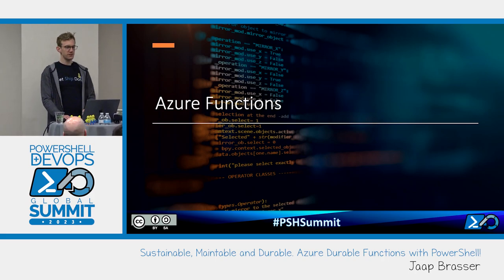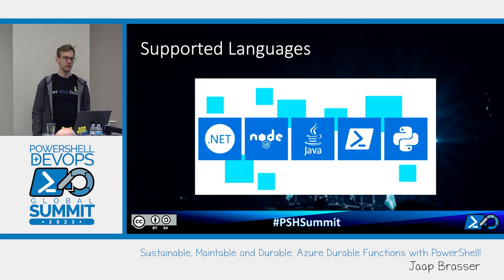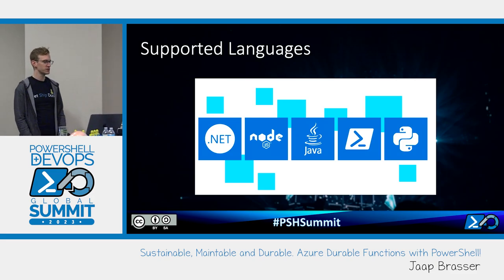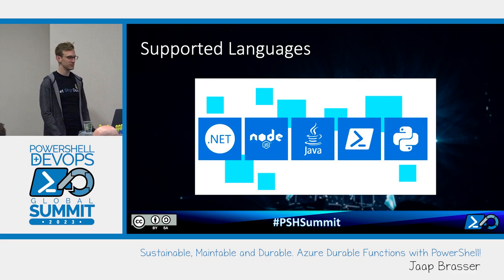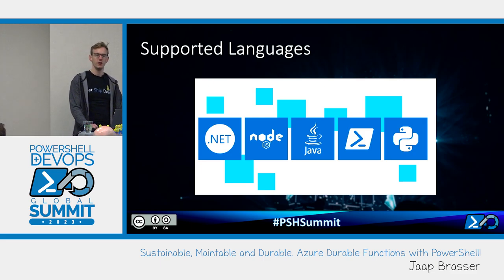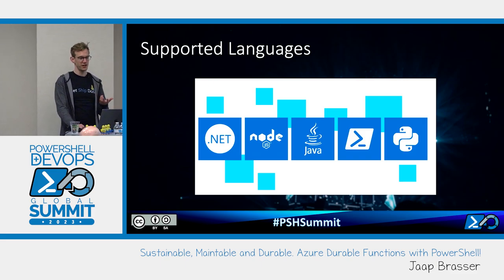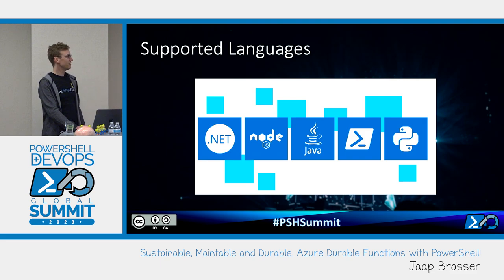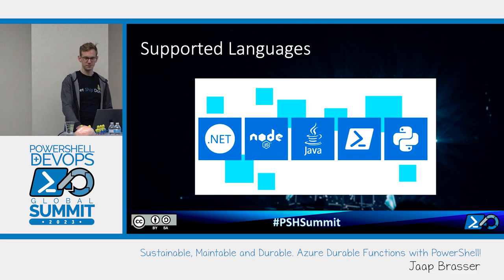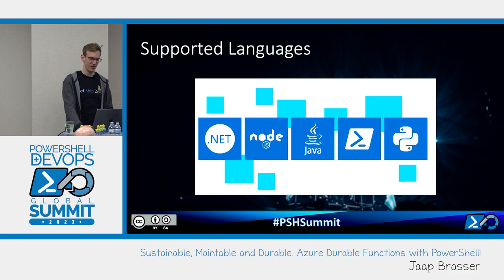Azure functions comes with a whole bunch of supported languages. .NET is the number one citizen — most of the best functionality is available there. There's also partial functionality in PowerShell durable functions; we don't have access to all the other methods. Node, Java, PowerShell, Python are all supported. It also used to include batch scripting, but it's no longer there, although you could probably still hack it together.